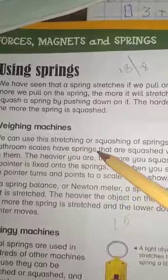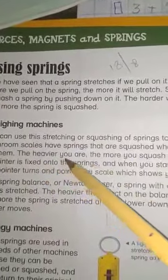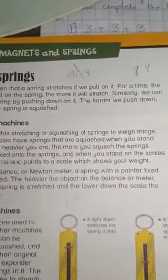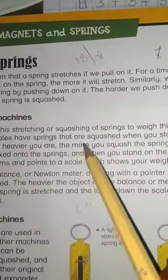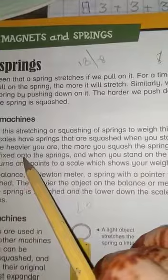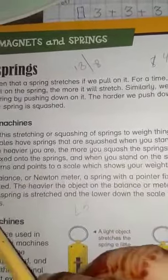Bathroom scales have springs that are squashed when you stand on them. The heavier you are, the more you squash the springs. A pointer is fixed onto the springs, and when you stand on the scales, the pointer turns and points to the scale which shows your weight.